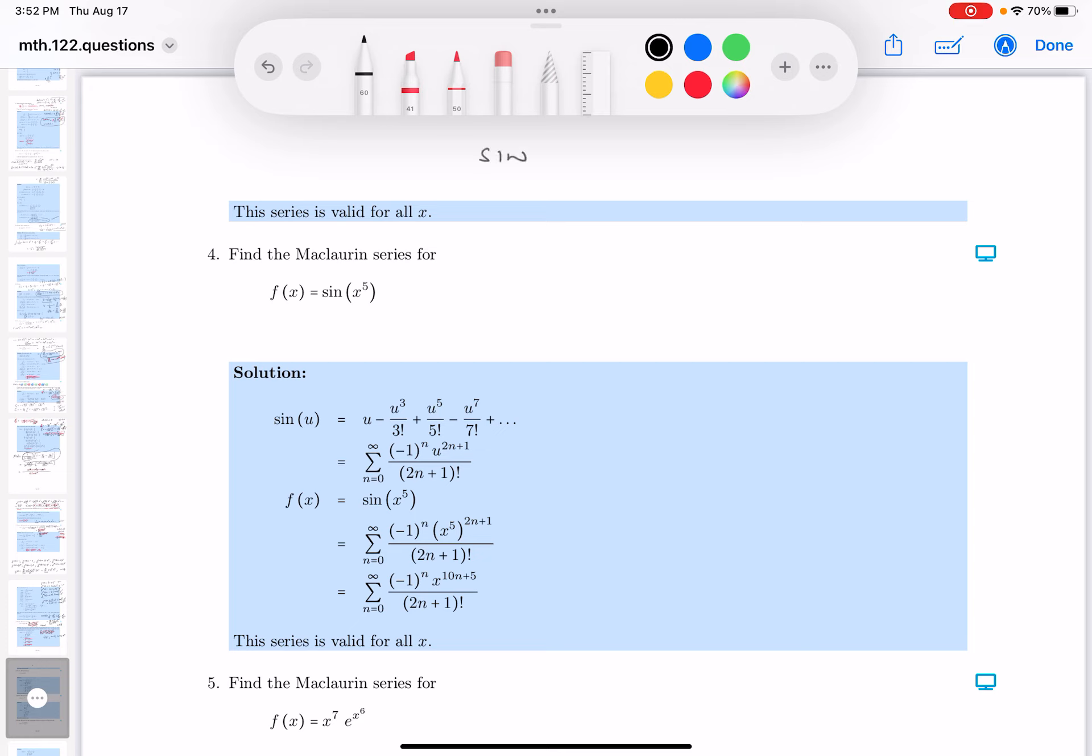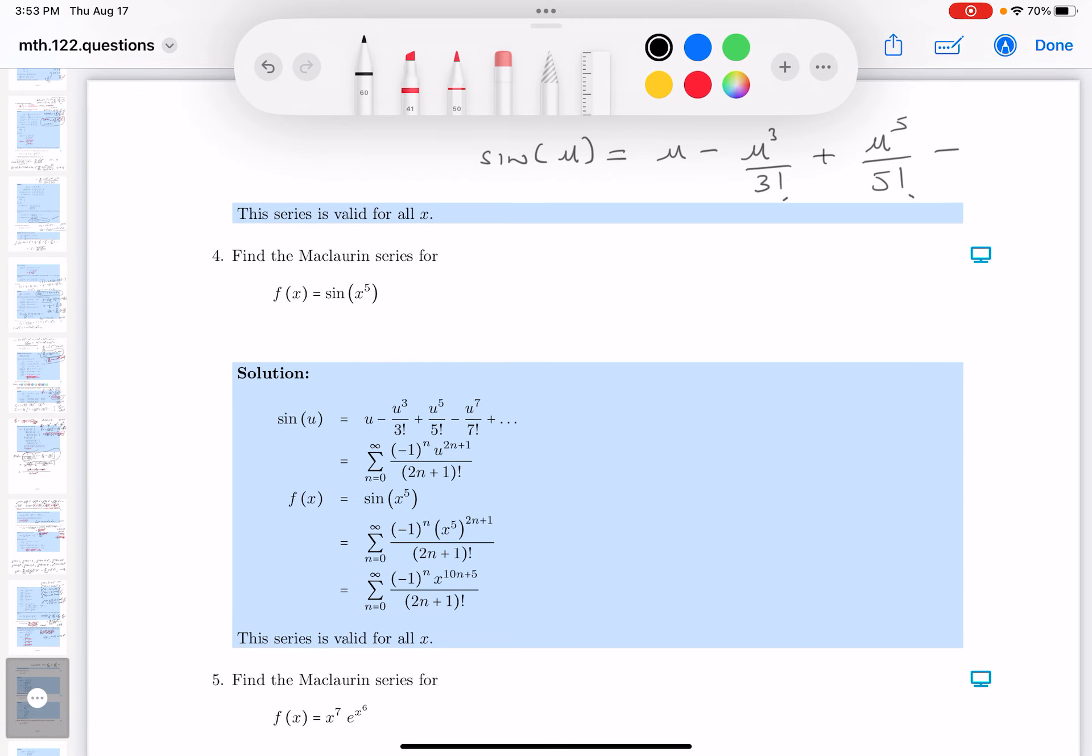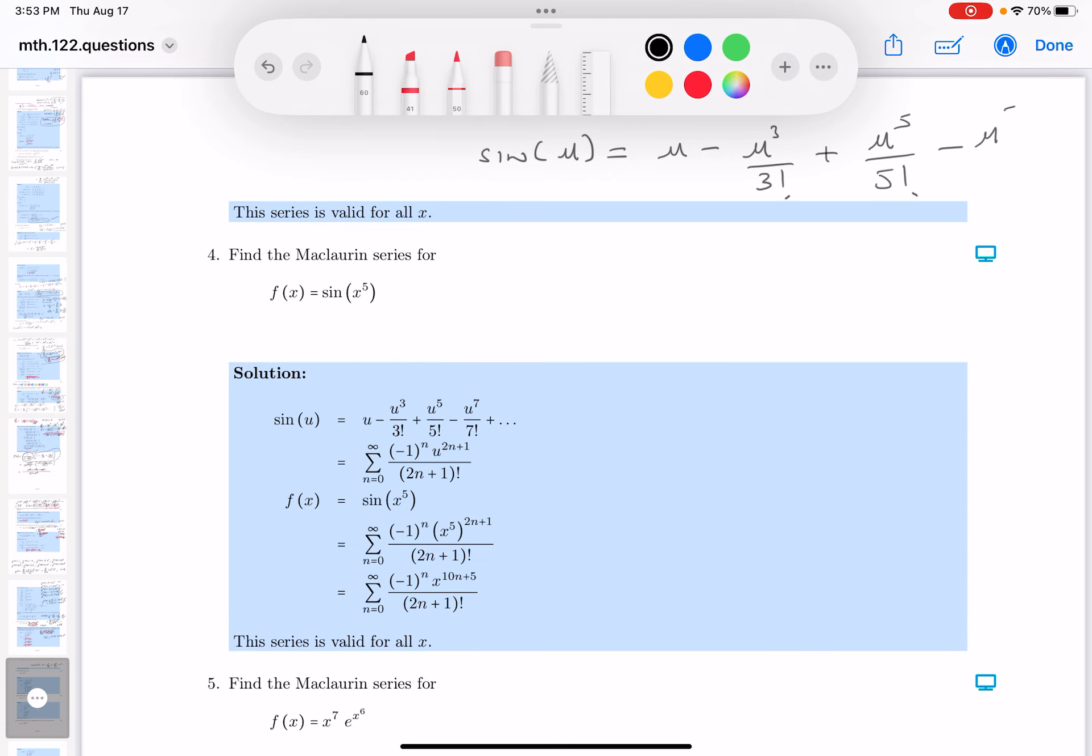Sine of u, that's going to be u minus u cubed over 3 factorial plus u to the 5th over 5 factorial. It's got a really nice pattern to it. So, just one of the first ones we've derived, this goes back quite a few chapters by the way, or sections of my notes. It's going to be u to the 7th over 7 factorial.